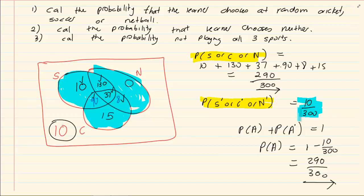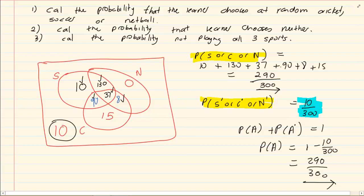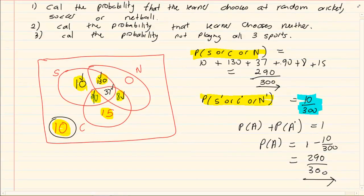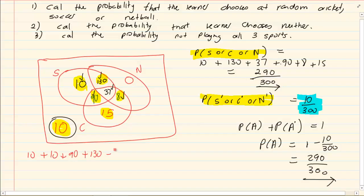Now look, when we say not playing all three sports, this is now a, I would say a devious question. Not playing all three sports means you're playing one sport there, you're playing two sports, you're playing two sports, you're playing one sport, you're playing two sports, you're playing no sports. But not playing all three, which means now whatever I've got in yellow there, I need to add it. So I have to say 10 plus 10 plus 90 plus 130 plus 8 plus 15. Which equals to 263. Remember, if they want the probability, then it must be over 300.